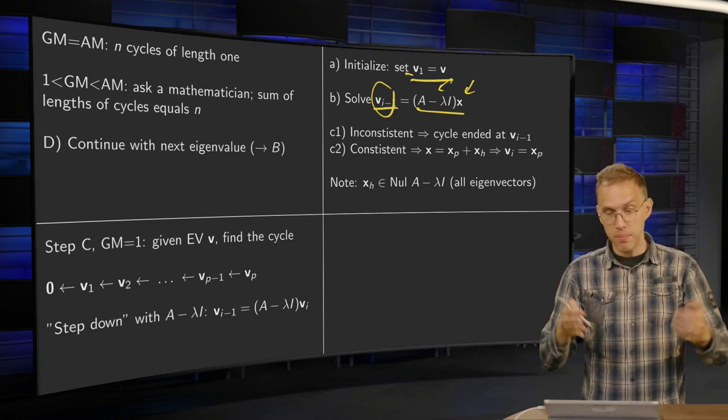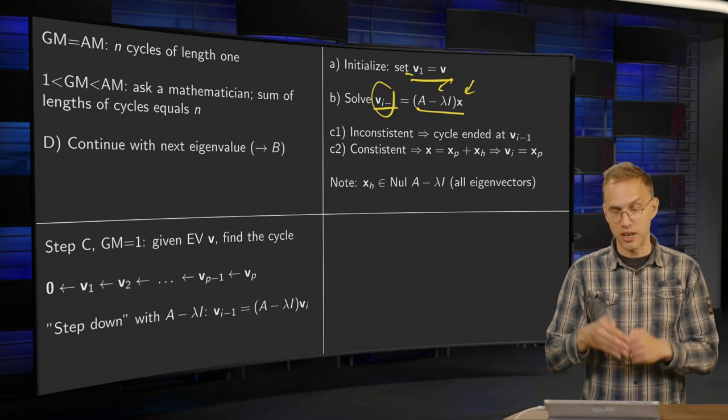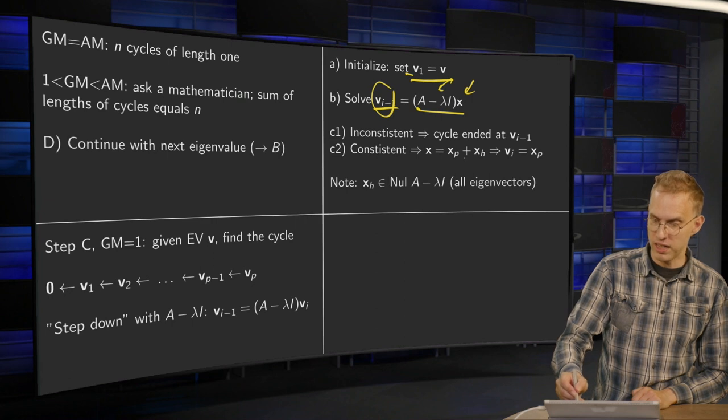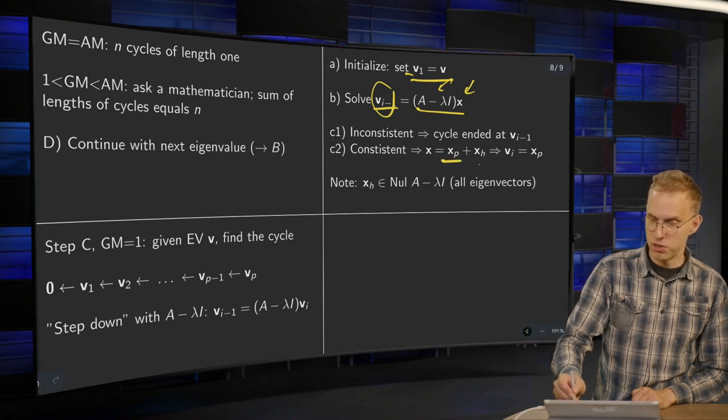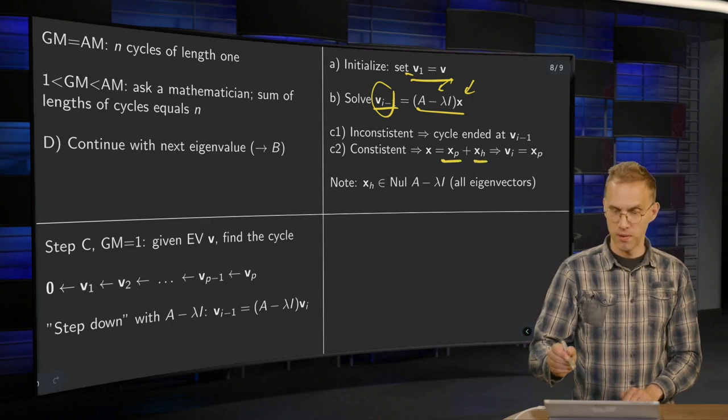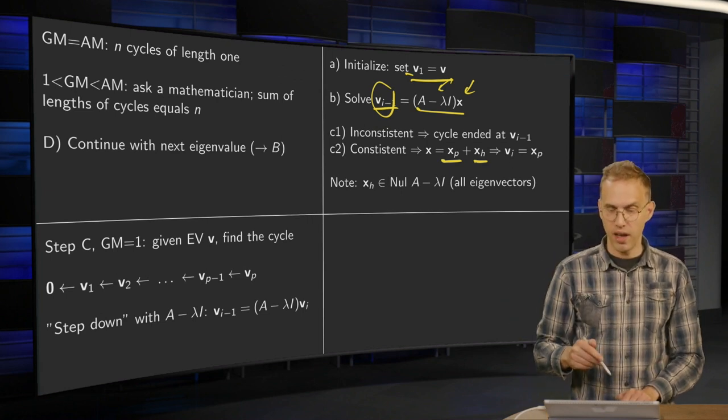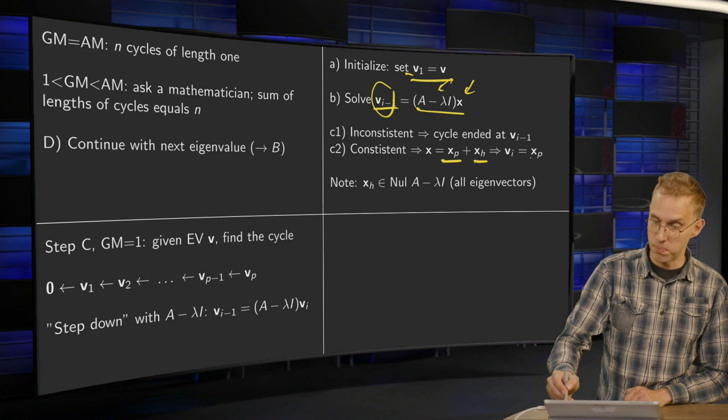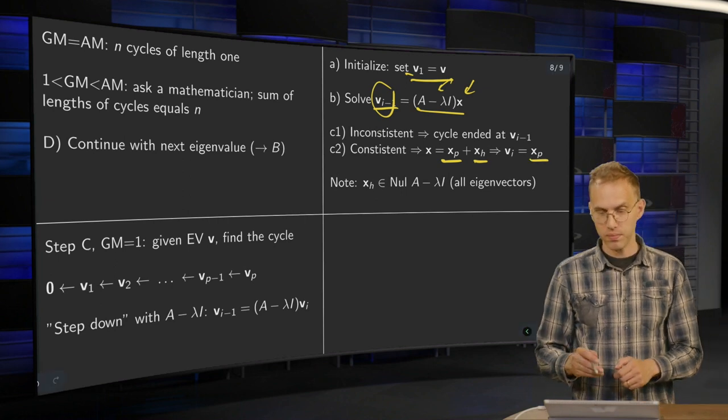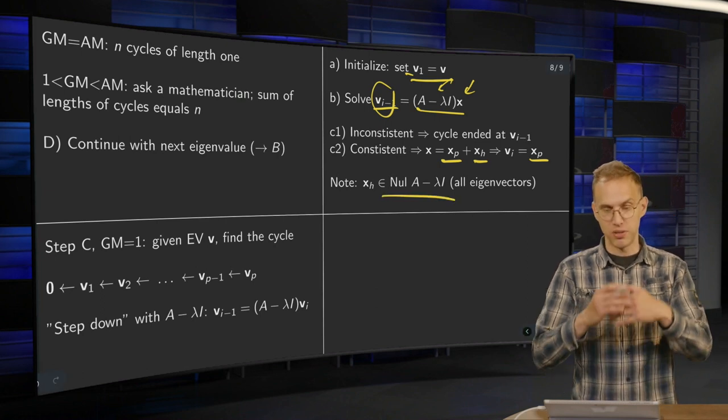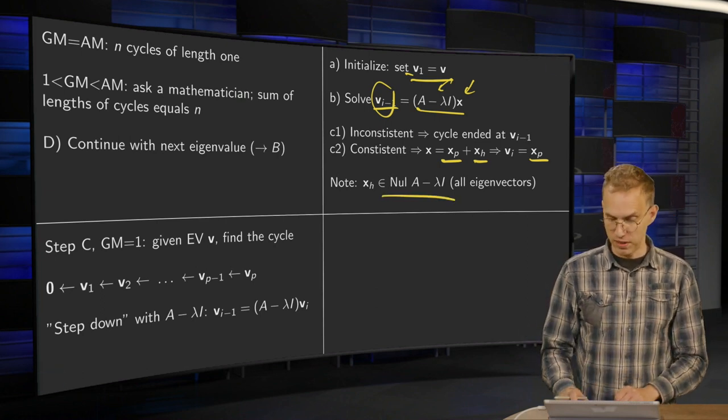You will see what happens. If this is inconsistent, your cycle has already ended. And if this system is consistent, you will find the solution: x is your particular solution plus a homogeneous solution. Your next generalized eigenvector is your particular solution. And the homogeneous solution is in the null space of A minus λI. So this gives you the normal eigenvectors.